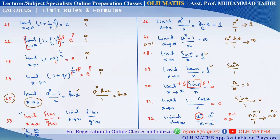This is an indeterminate form (1^∞). When the variable is running in the exponent, we take the natural log of both sides to bring it down from the exponent. This leads to a 0/0 or ∞/0 form in the denominator. We then apply L'Hôpital's rule to get the right answer.